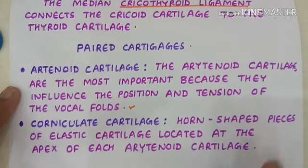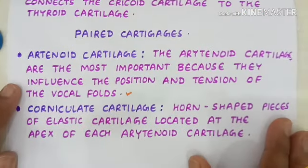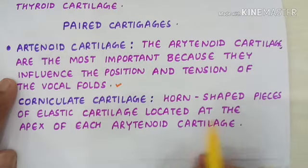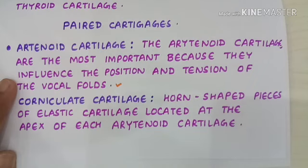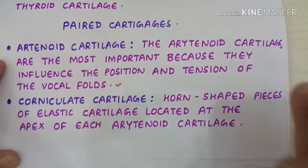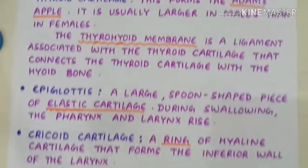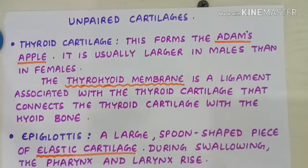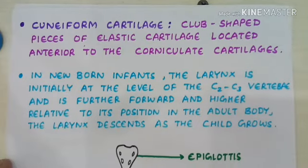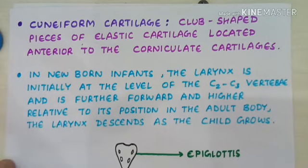The corniculate cartilage is a horn-shaped piece of elastic cartilage located at the apex of each arytenoid cartilage. The cuneiform cartilage is a club-shaped piece of elastic cartilage located anterior to the corniculate cartilage.